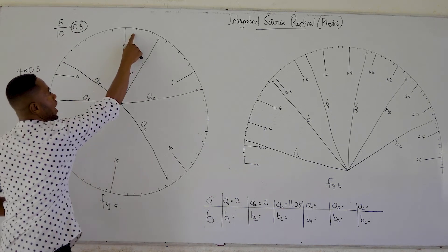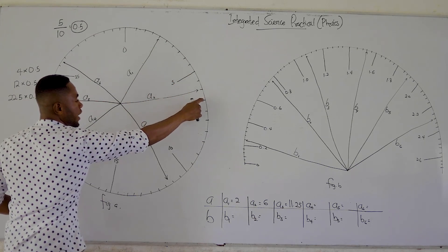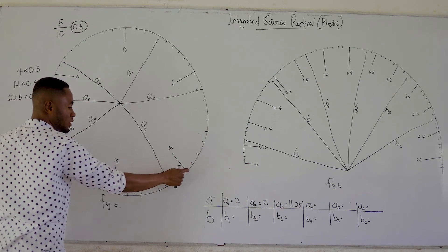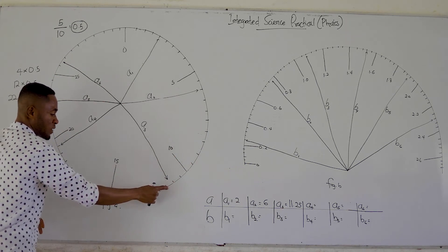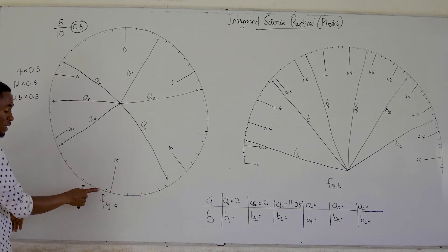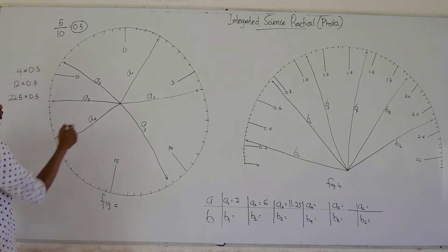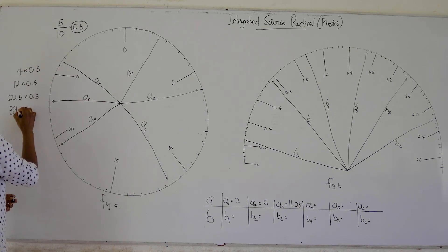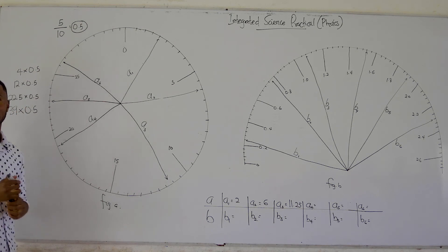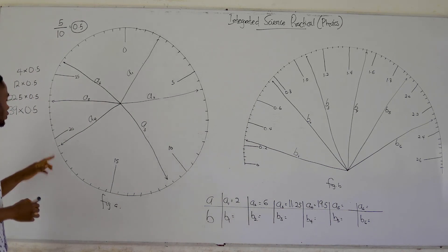For a4: counting the graduations gives us 39. We multiply 39 by 0.5 and we get 19.5. So a4 equals 19.5.